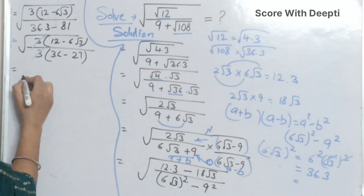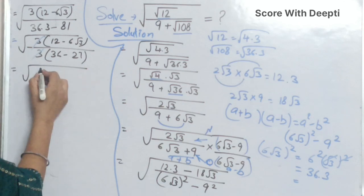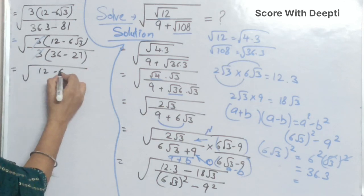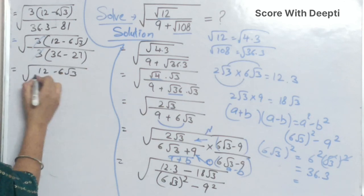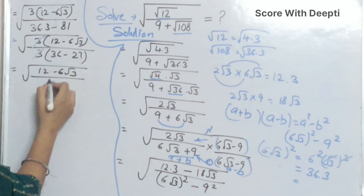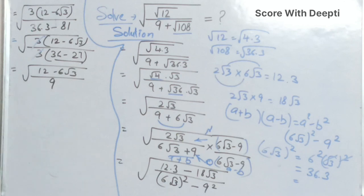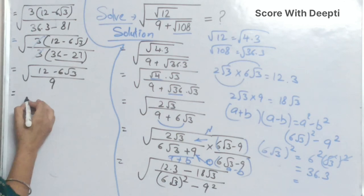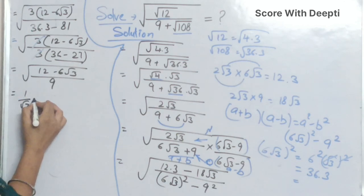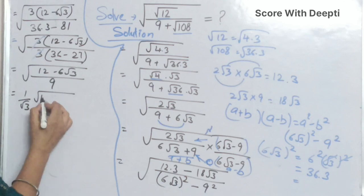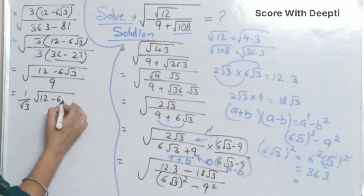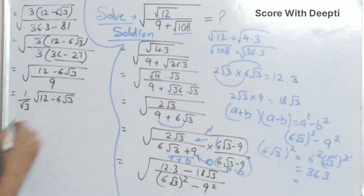We solve this and get 9. Next we separate the two terms and write 1 over square root 3 into the quantity 12 minus 6 square root 3.